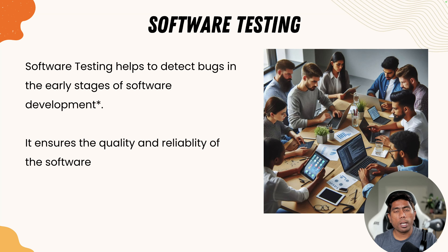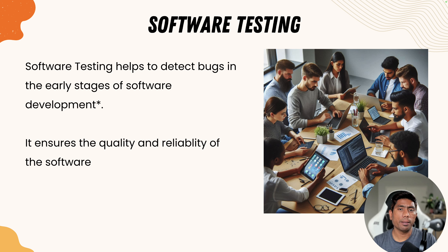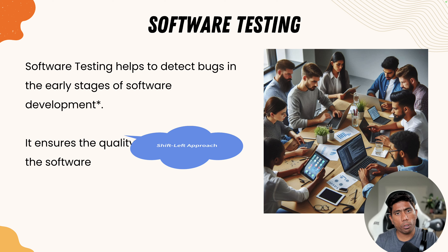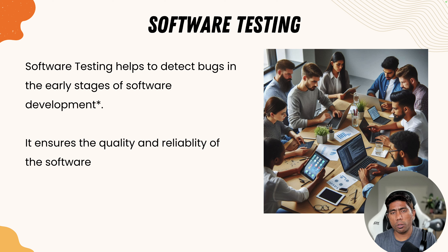Software testing will also help you detect bugs in the early stage of application development. There are many different approaches needed to identify bugs early. The shift left approach is one approach used to identify software bugs in the early stage. Don't worry about that terminology for now because you are just getting into software testing — it will become helpful as we get along in this course.